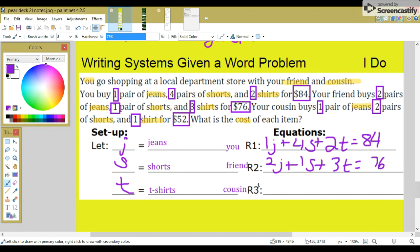The last equation is for your cousin. Your cousin buys one jeans, one pair of jeans, two pairs of shorts, and one t-shirt for $52.